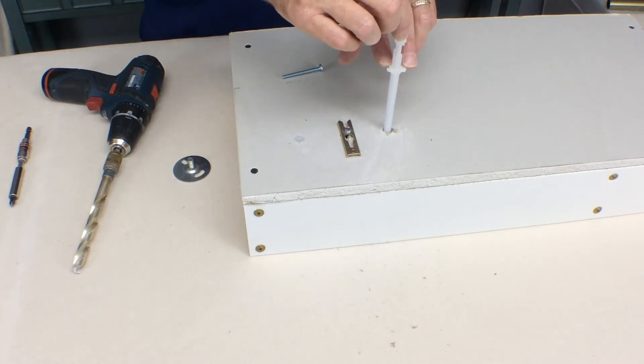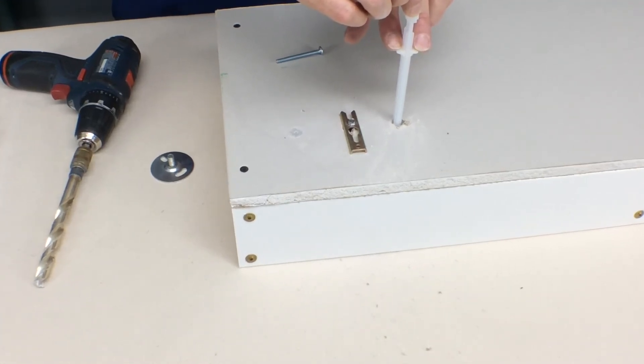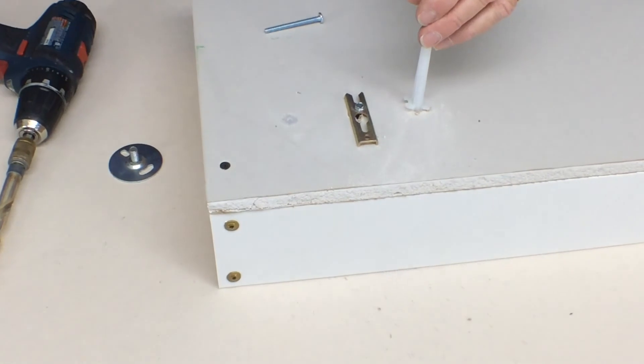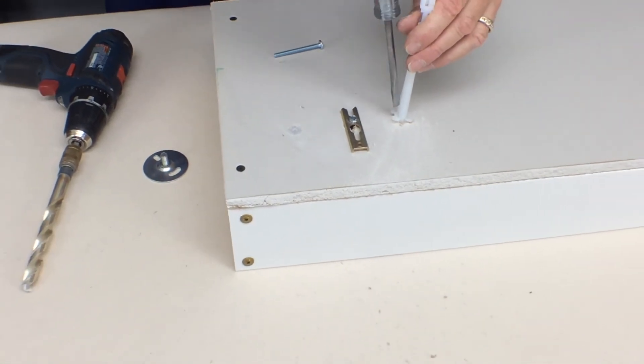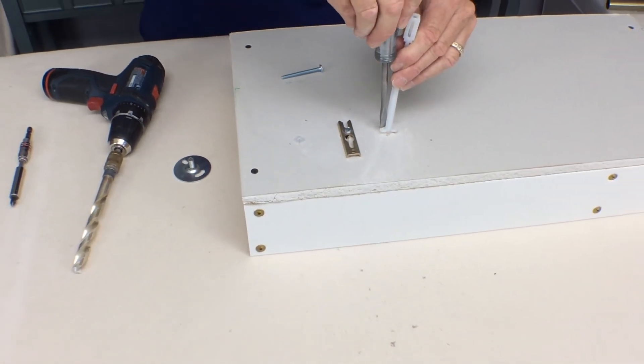Then you have this flange here, this plastic flange that you're going to ratchet down on the plastic straps and make it tight to the wall. In this situation, I normally use a screwdriver in order to work it in tight.